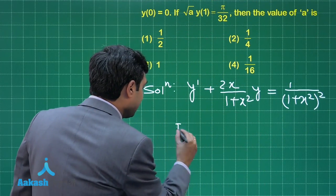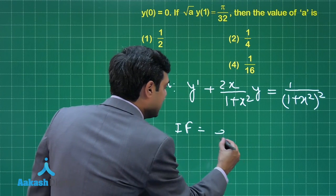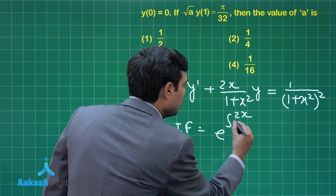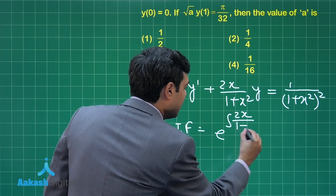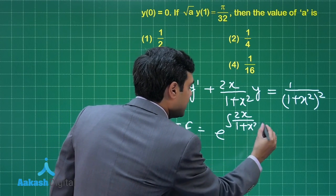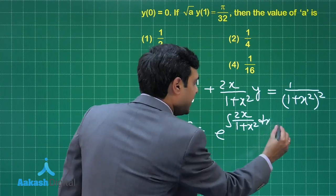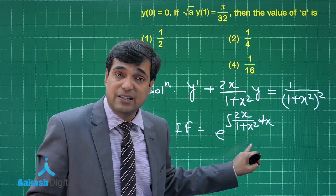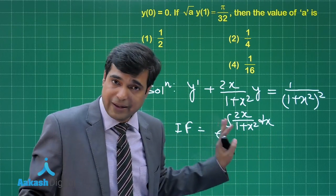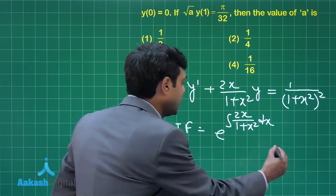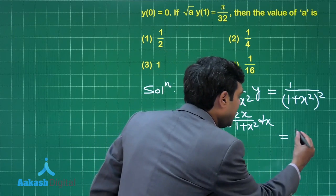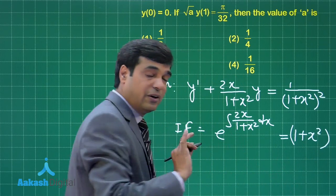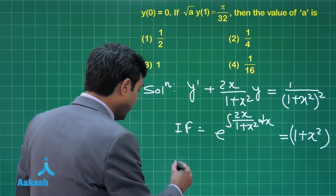The integrating factor is e to the power of ∫(2x)/(1 + x²) dx, which gives e^(ln(1 + x²)), simplifying to (1 + x²).